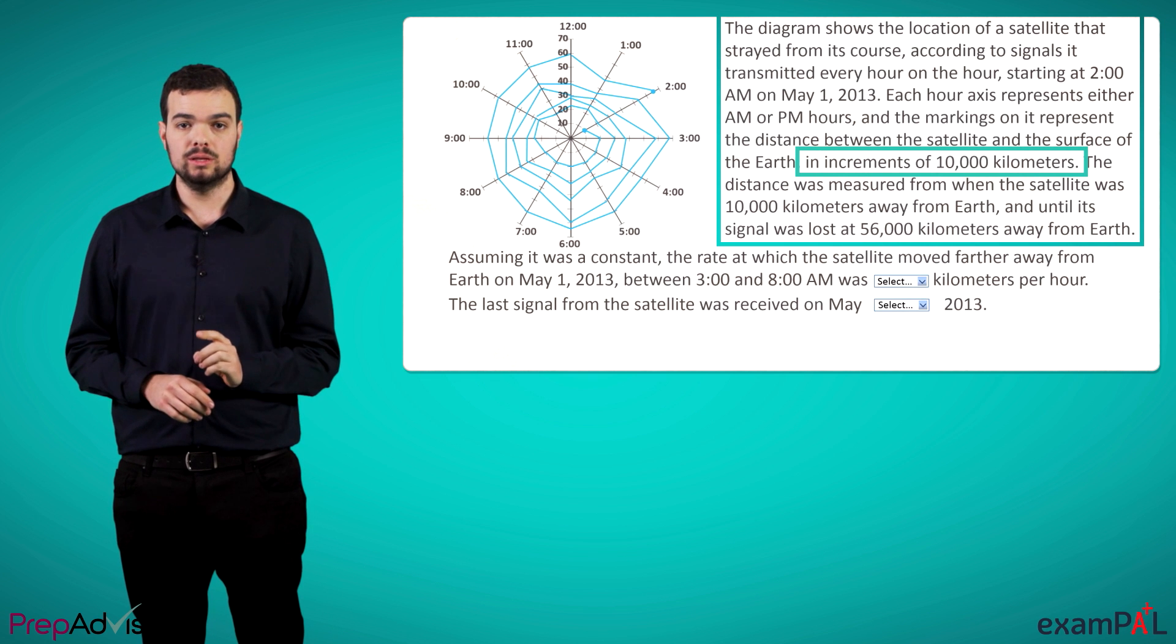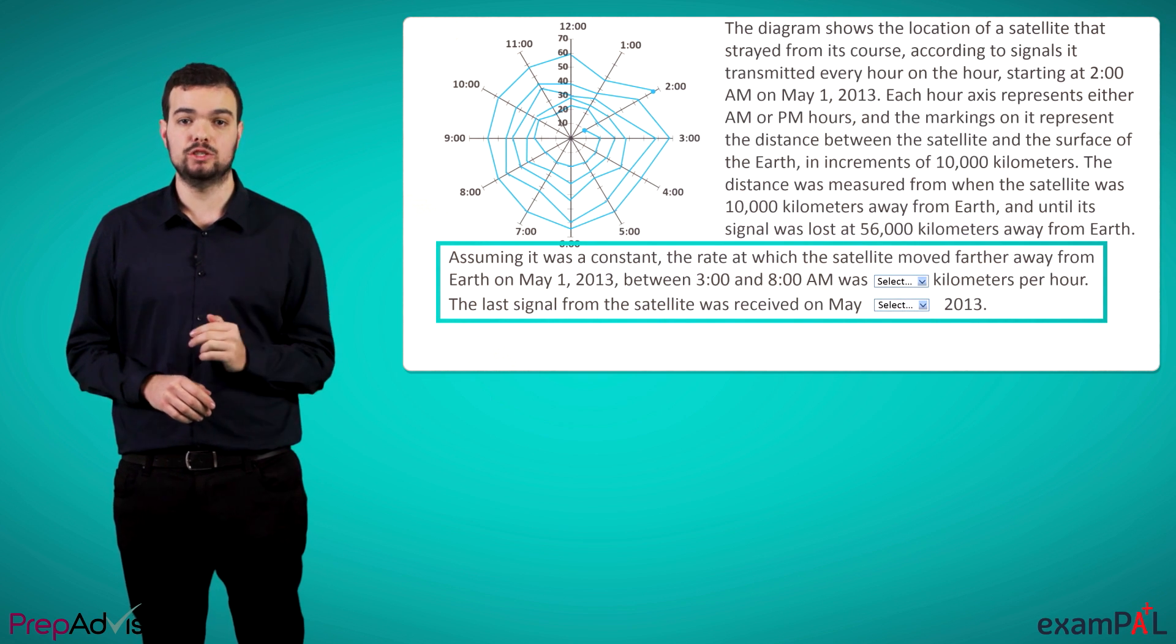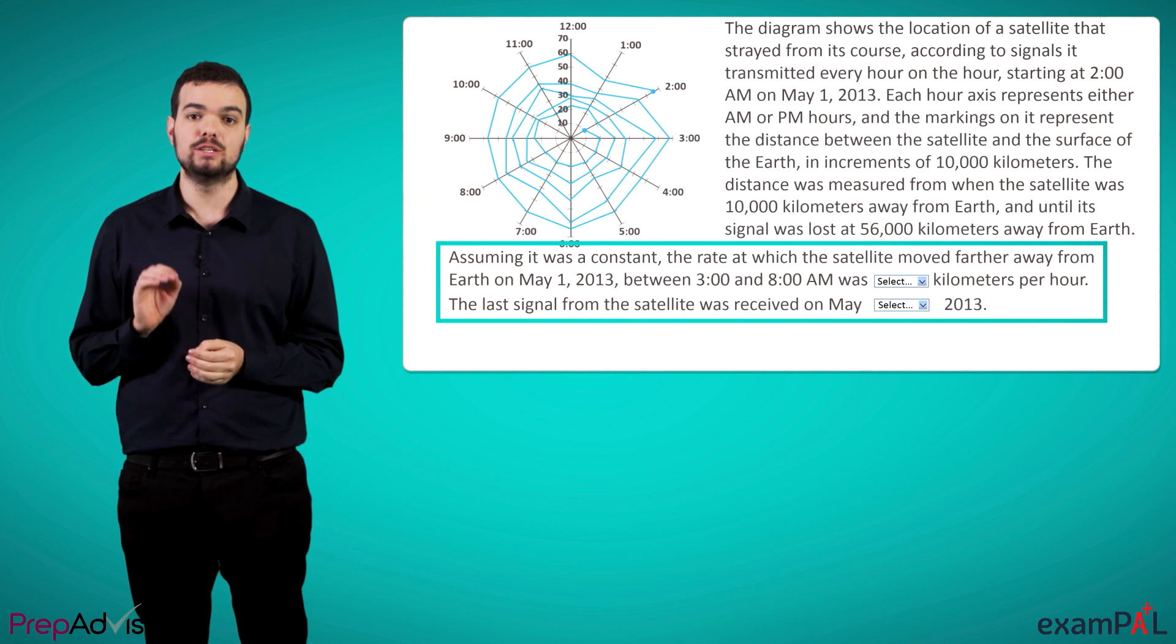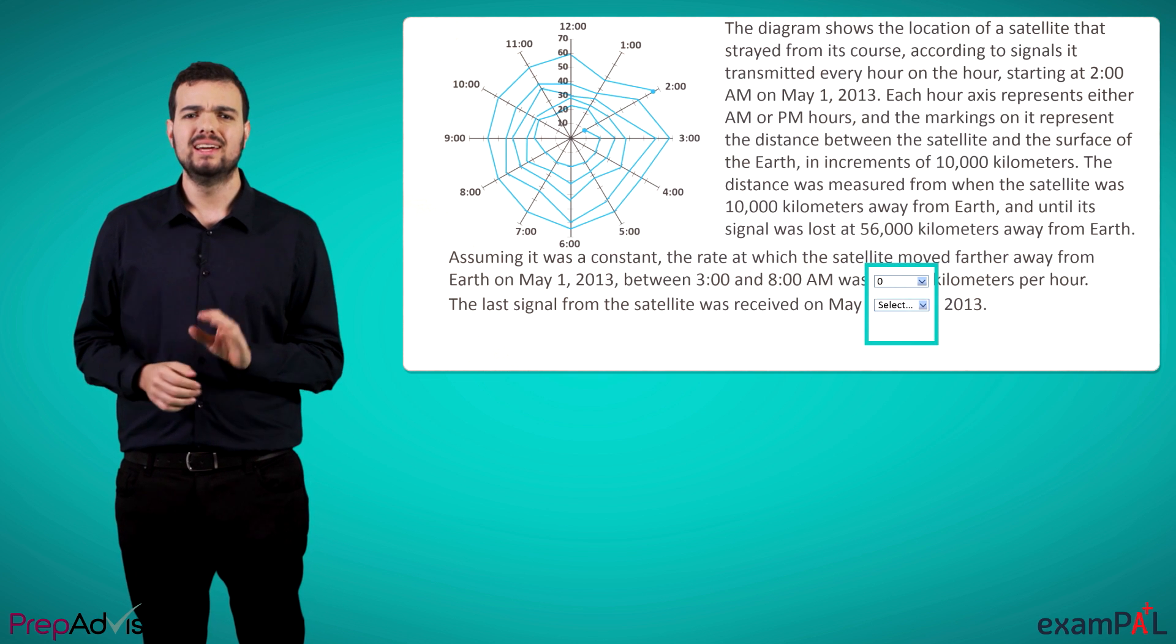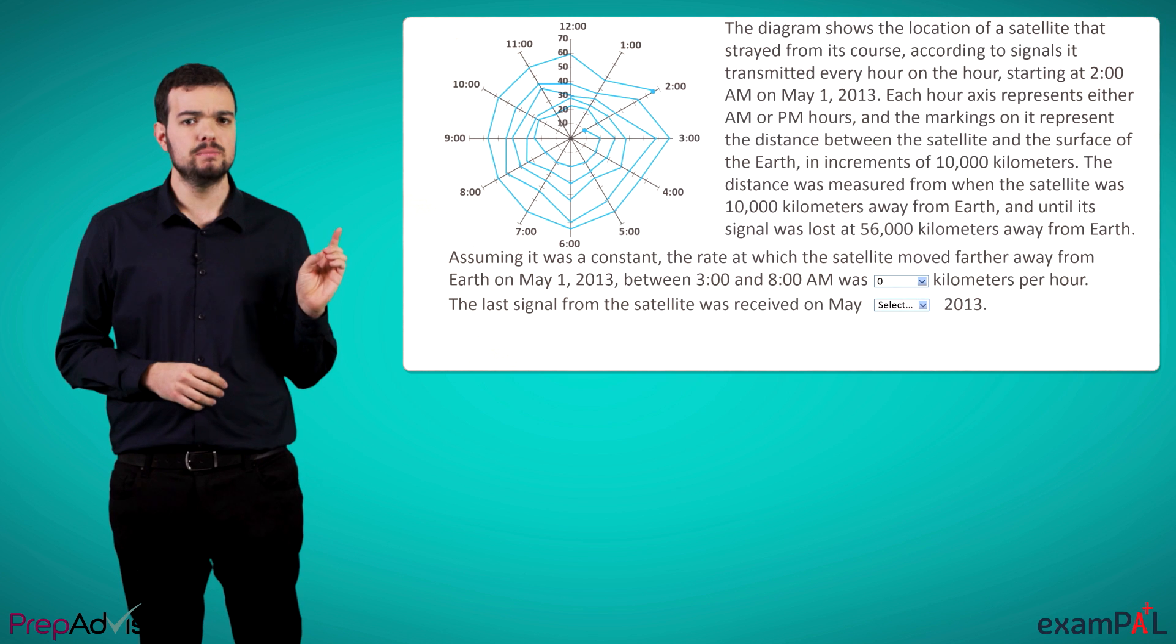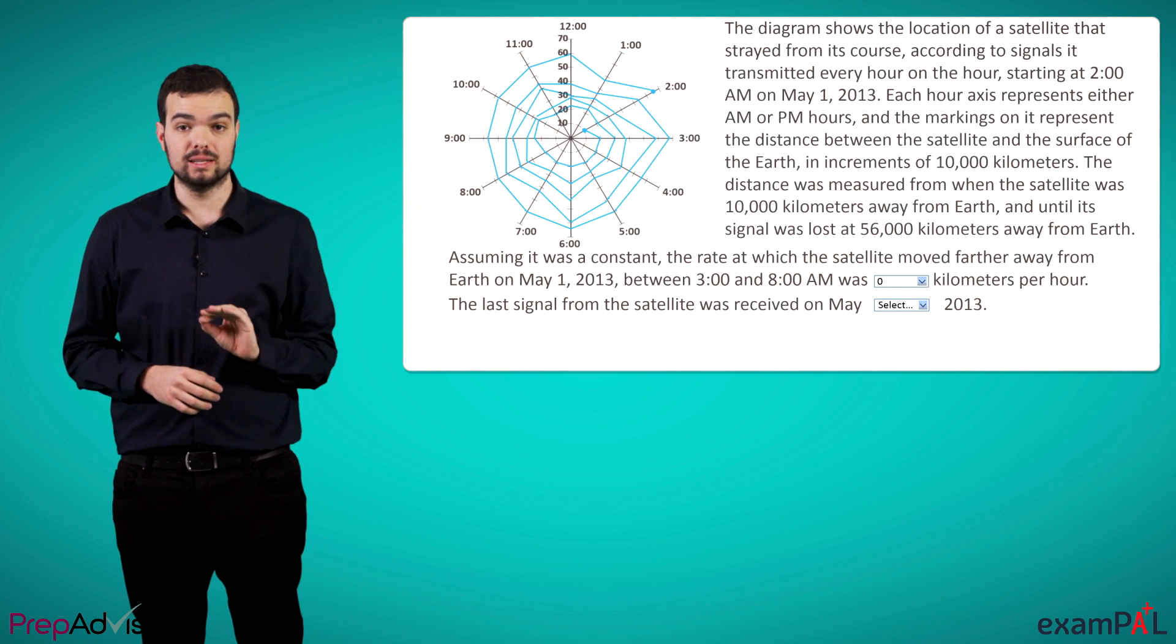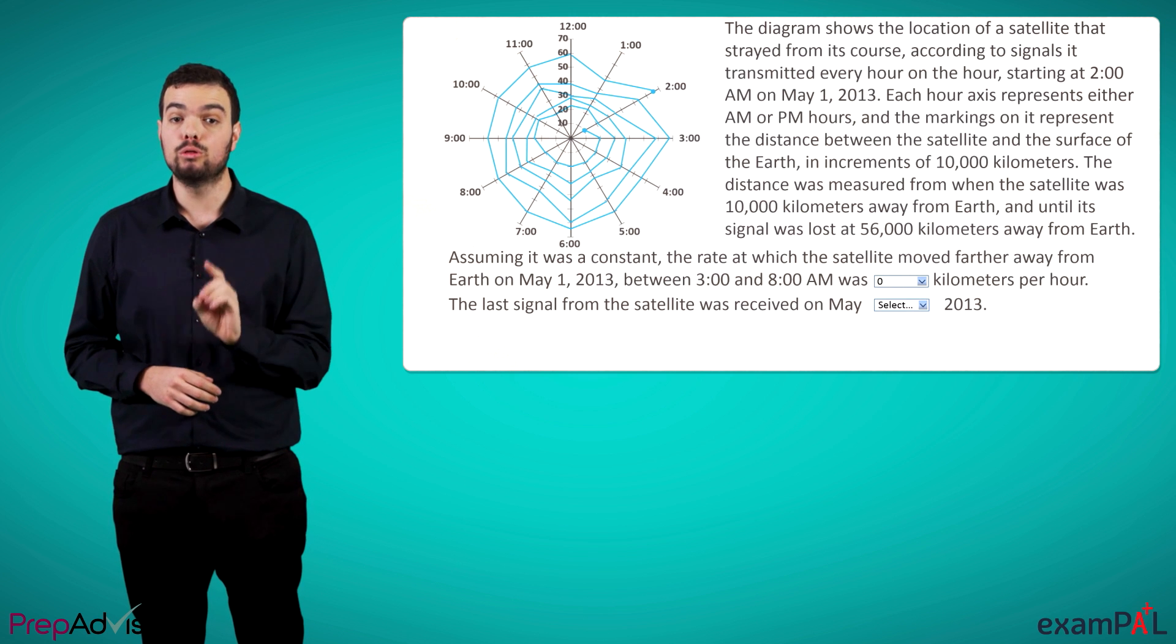Finally, and most importantly, at the end of the text will be two sentences in which a word or section is left blank. Our job is to complete each sentence by choosing the right option out of a drop-down menu. It's important to note that both of these sentences make up a single question, and there is no partial credit. In order to get the points for the question, we have to get them both right.